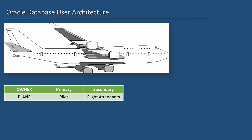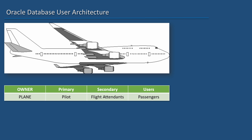Now, the pilot doesn't need to do all the administrative functions on a plane. There are flight attendants who could do some of those administrative functions. They can control the overhead compartments, interior light switches, attend to the passengers' needs, etc. So they are next to the pilot in terms of authority. And remember, they still operate on the objects owned by the plane.